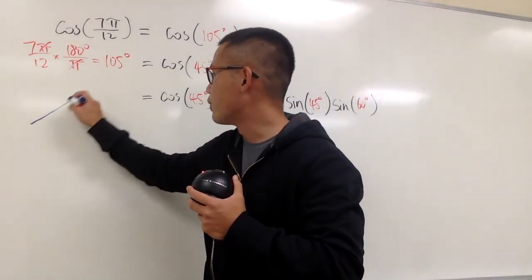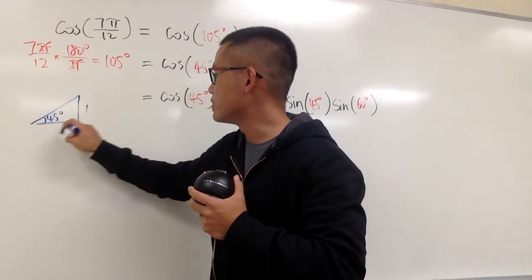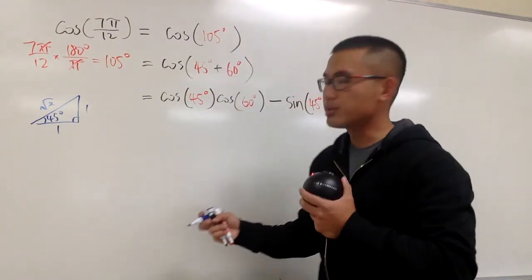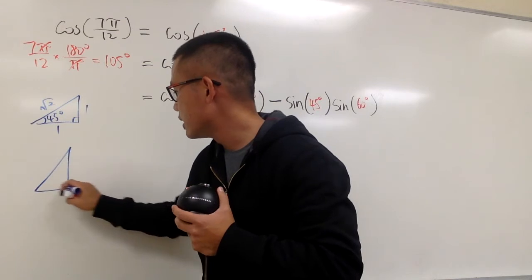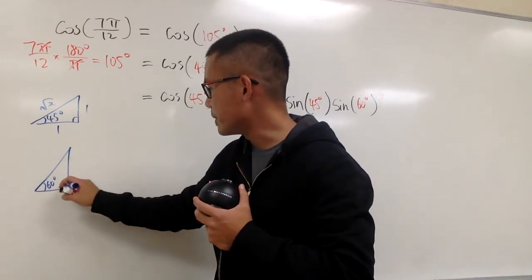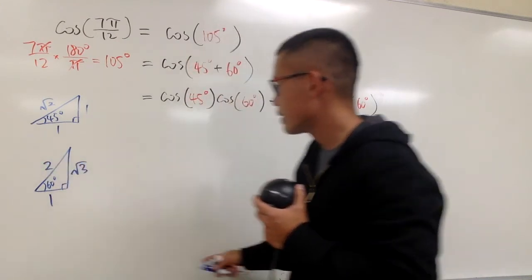Let's look at the 45, 45, 90. So this is 1, 1, square root 2. This is my right angle, right? And I also need to have the 60 degree angle, so let me just do this real quick for you guys. This is my 60 degrees, right? And then triangle right here, that means the right angle. 1, and this is square root 3, and this is 2.